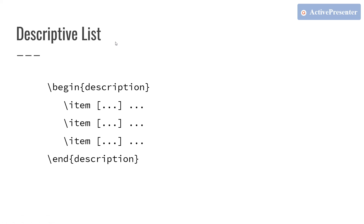For a descriptive list, we use the description environment embedded between begin and end. In the item command, we optionally specify the name of the description in a pair of square brackets — whatever you specify in the square brackets will be the name of the list. Now we will switch over to TeXstudio and demonstrate these types of lists.